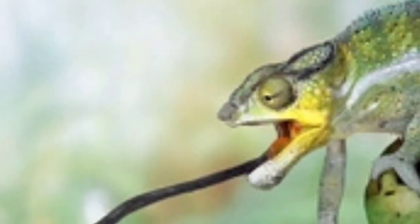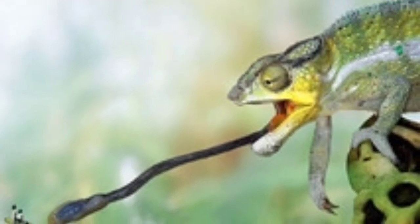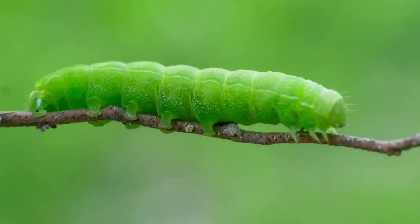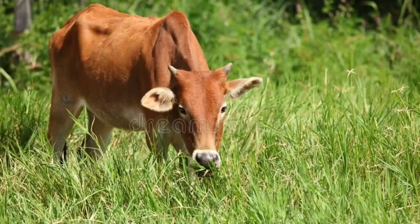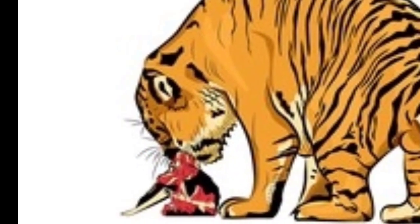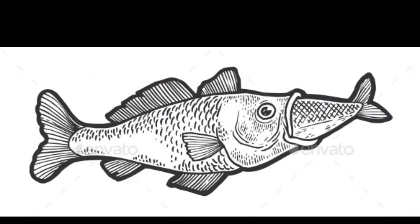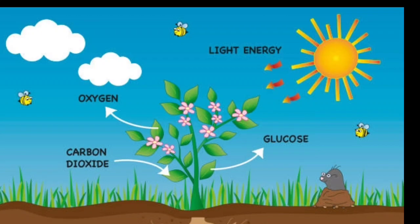All organisms need food. The food and the mode of procuring it differ from organism to organism. The process of intake and utilization of food by organisms is called nutrition. Caterpillar nibbles the leaf, butterflies sucking honey, birds pecking fruits, cow bites grass, tiger or lion bite and tear flesh, fish swallows small insects in the water — we can see diversity in the mode of procuring food. Plants are also organisms, and we know how they produce food through photosynthesis.